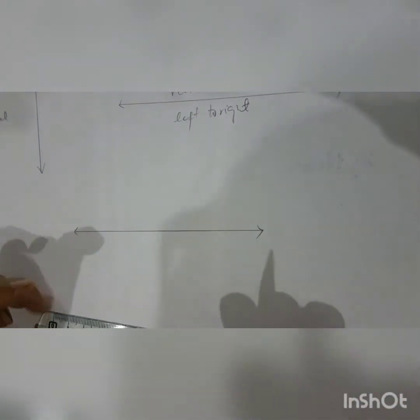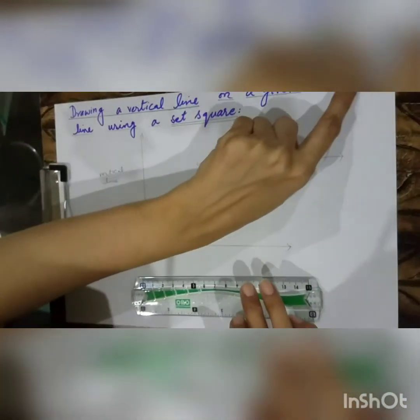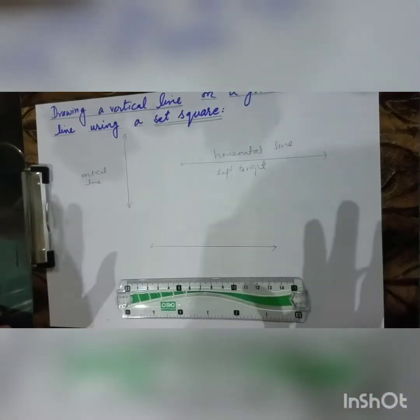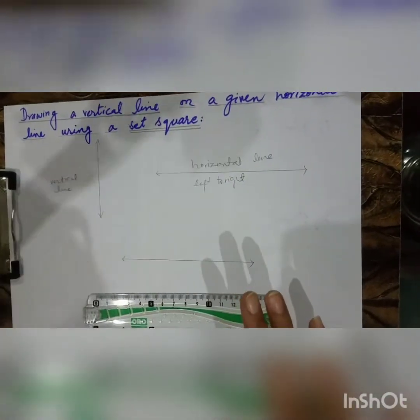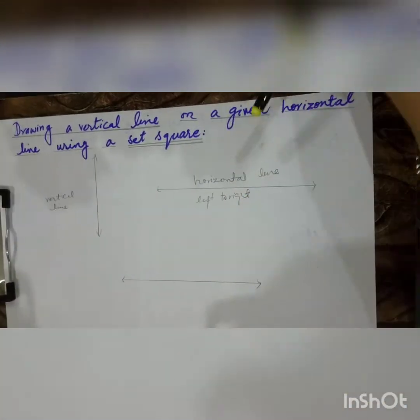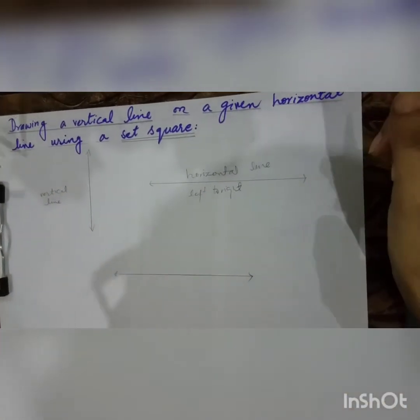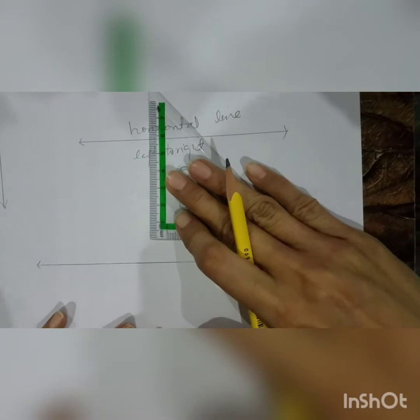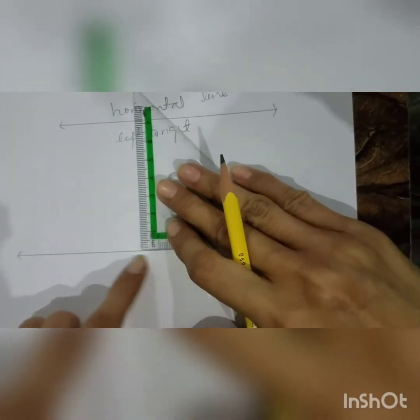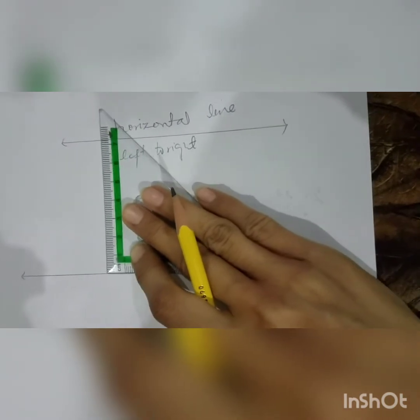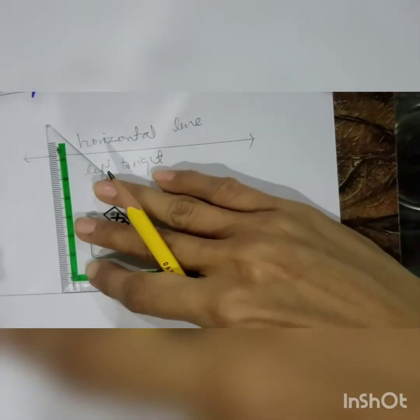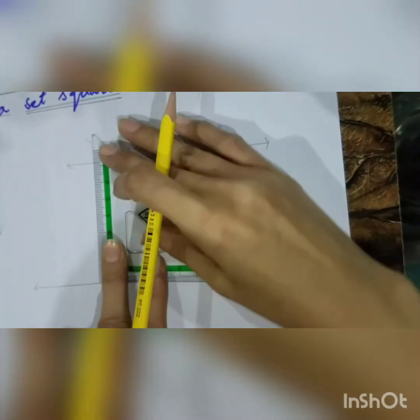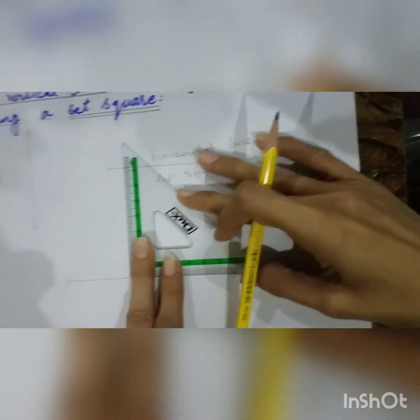We have drawn a horizontal line with the help of a ruler. Now the second step: draw a vertical line on the given horizontal line. You are going to set an edge of the set square on the given horizontal line, and then give it a slide.